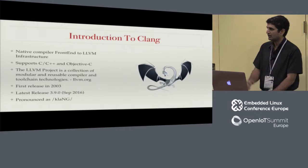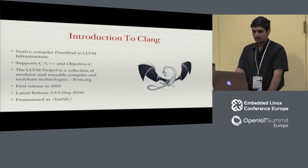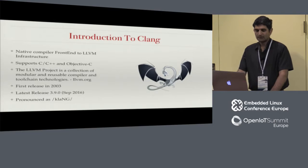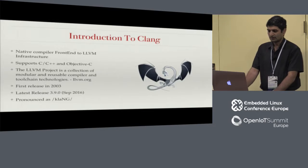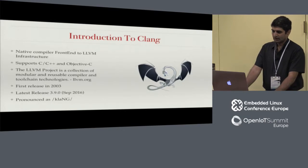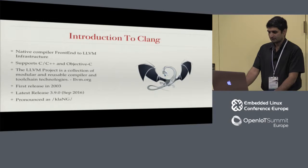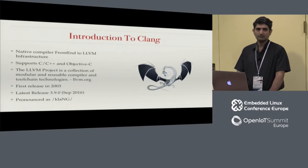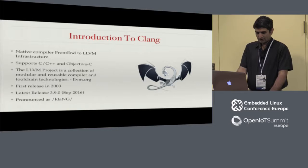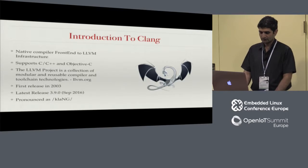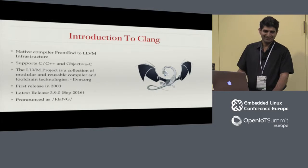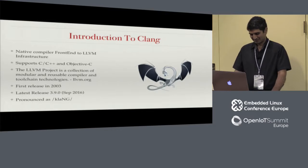So what is Clang? Clang is actually a front-end for C and C++, and it uses LLVM infrastructure to generate the back-end and the code generation. Primarily it supports C, C++, and Objective-C. LLVM is actually a long-lived project — Clang was added afterwards. It's a reusable infrastructure for various compilation technologies. The latest release is 3.9; most of my work is based on 3.8. And some people pronounce it as CLang, but it is actually Clang.